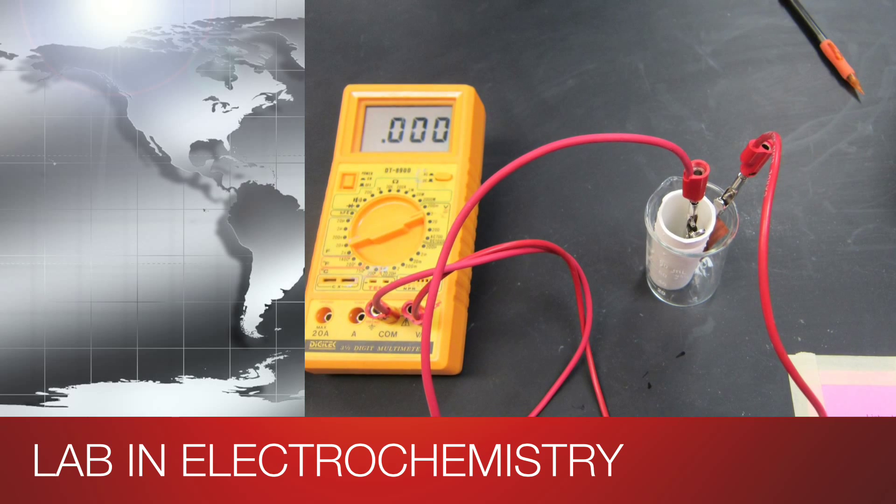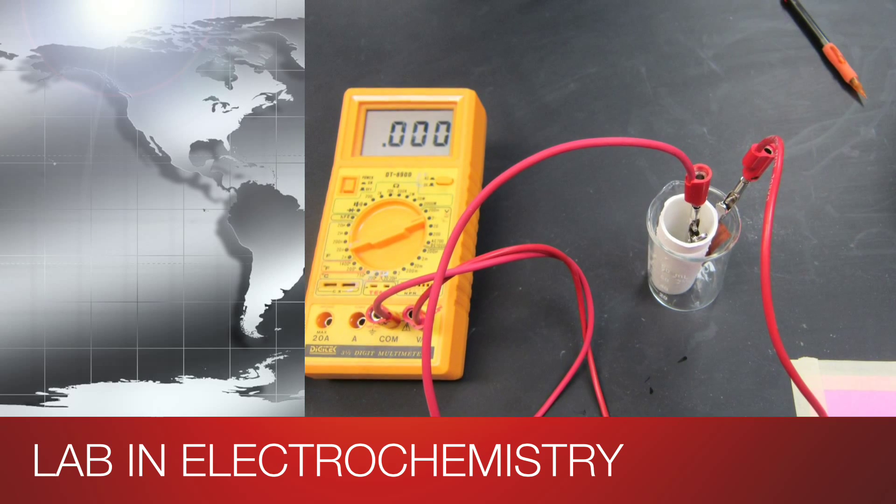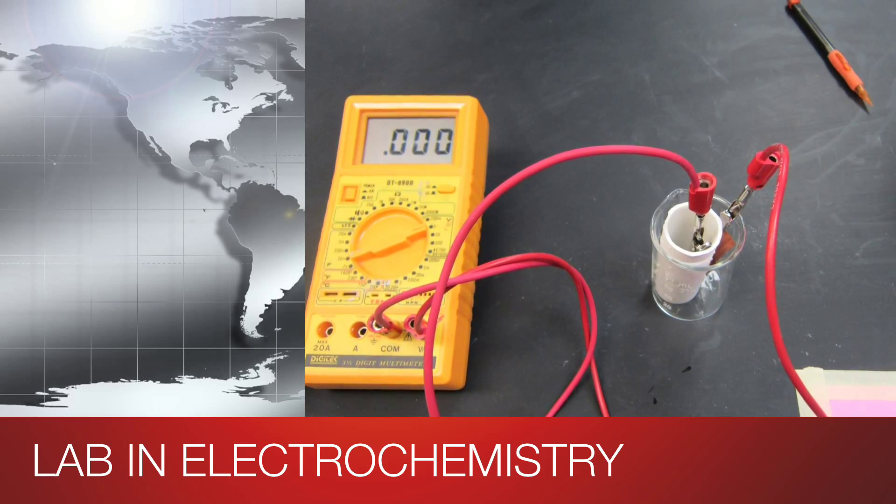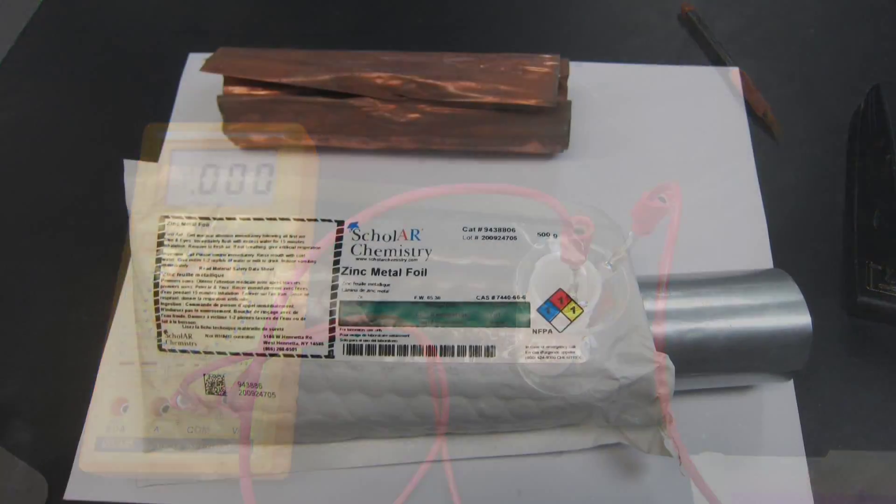What I am going to show you today is how to set up an electrochemical cell, namely a galvanic cell, to measure the variation of EMF with changing concentration.